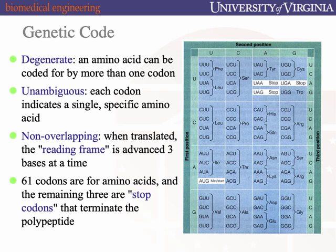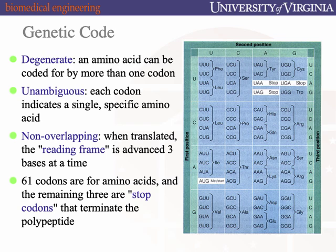Another characteristic: even though there are 64 possibilities, only 61 of those encode amino acids. There are three stop codons — they tell the translational machinery to stop making polypeptide. That indicates the end of the translation process and creates the C-terminus on the mature polypeptide.